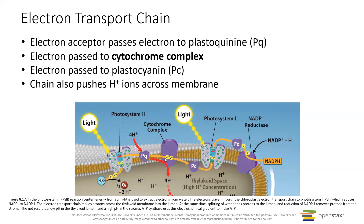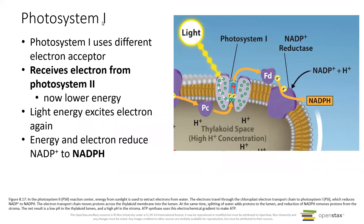Plastocyanin then passes the electrons to special chlorophyll molecules in photosystem 1. If you're thinking, isn't that kind of what happened in photosystem 2 - yeah. The difference is what the electron acceptor is and where the electrons come from. Photosystem 1 does receive light energy, the light energy excites the electrons, we pass that energy along to another pair of special chlorophyll molecules, and they become oxidized and lose electrons. Those electrons are replaced by the electrons from the electron transport chain. Photosystem 1 doesn't split water - photosystem 2 splits water.